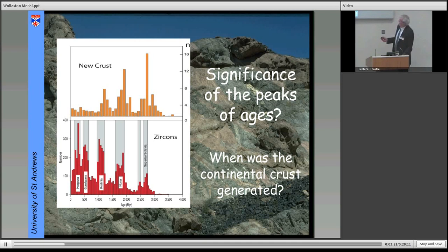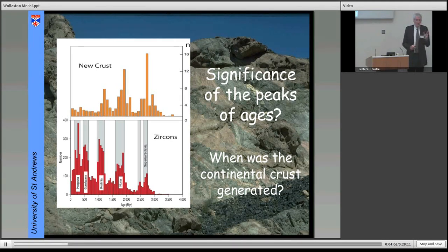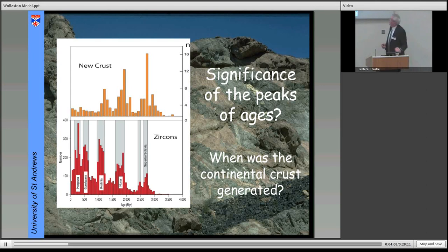On the top, just for comparison, is from Ken Condie, who has done something slightly different. He's taken ages of rocks that were derived from the mantle. So these are new fragments of continental crust. And again, they make peaks. And are those peaks primary? So the two things I want to look at is the significance of these peaks of ages. What do they tell us about the evolution of the record we have from the continental crust? And when was the continental crust generated in different proportions?